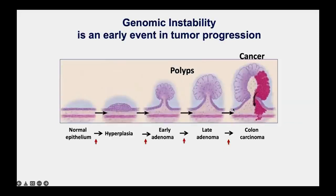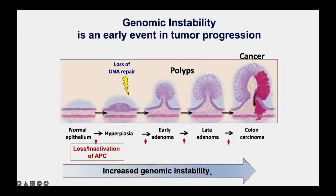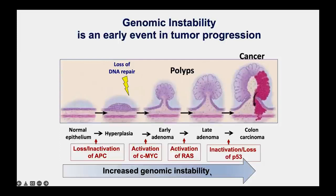Coming back to the multi-step tumor progression pathway as mapped to colon cancer: we see all the steps with different mutations in different safeguards—tumor suppressor genes and oncogenes along the way. Loss of DNA repair is thought to be an early step in colon cancer development. Once DNA repair is lost and genome instability increases, the cell accumulates all the other mutations that lead to a full-blown carcinoma.